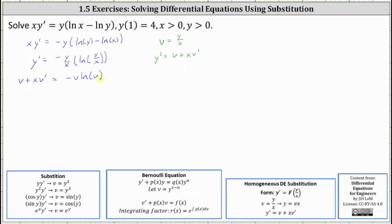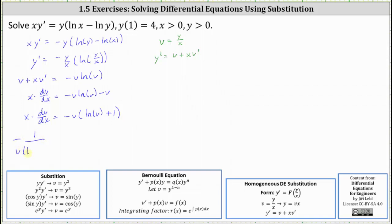We now have a separable differential equation. Let's subtract v from both sides, writing v' as dv/dx, which gives x times dv/dx equals negative v times natural log v minus v. Factoring negative v from the right and separating variables gives us negative one over v times natural log of the quantity v plus one, dv, equals one over x dx.